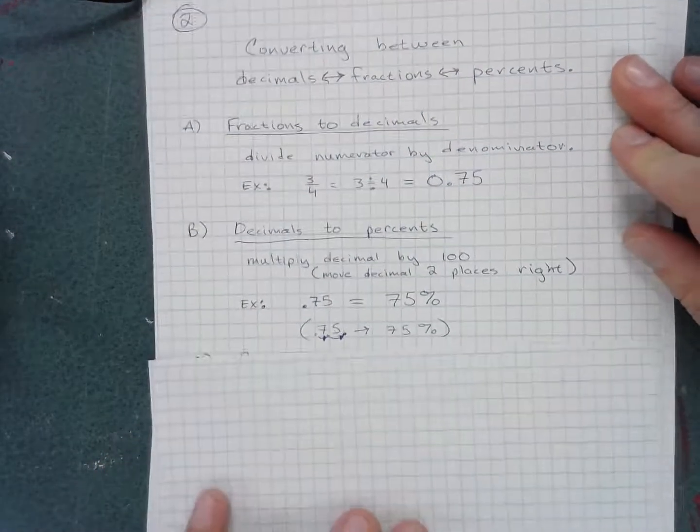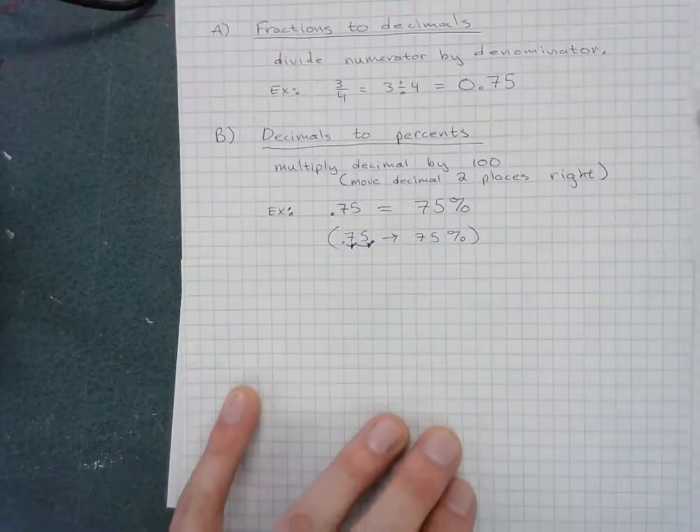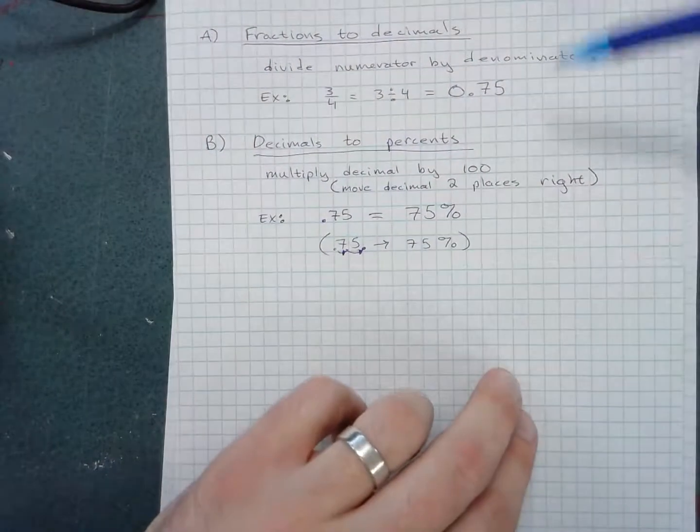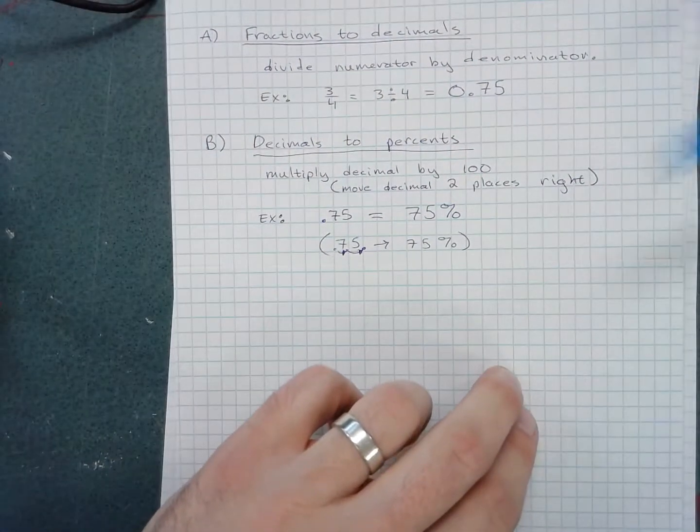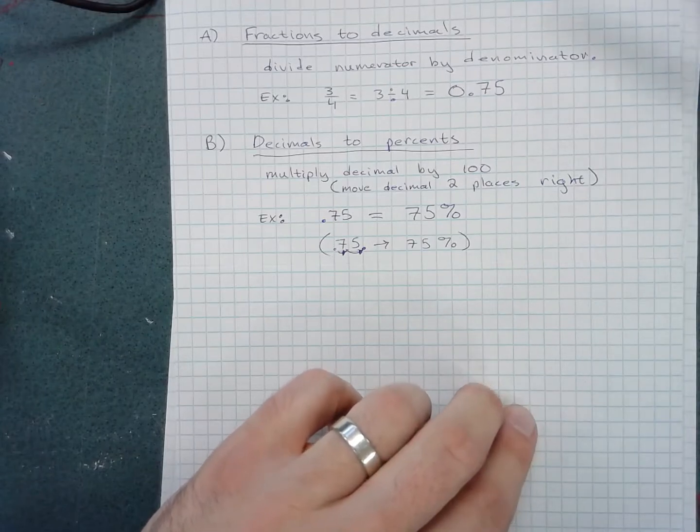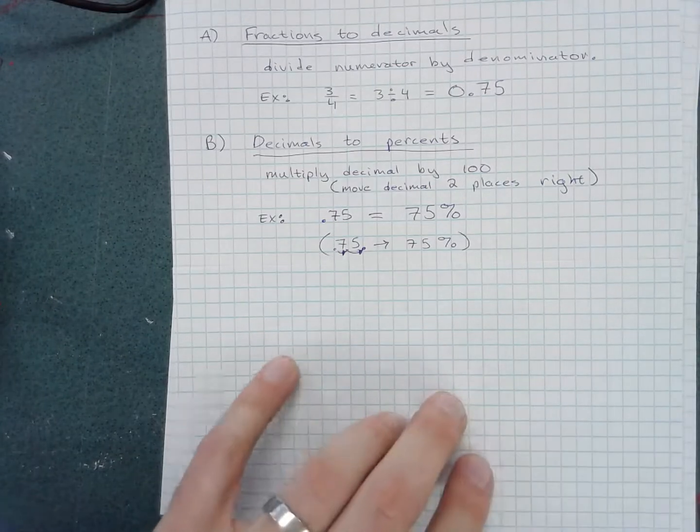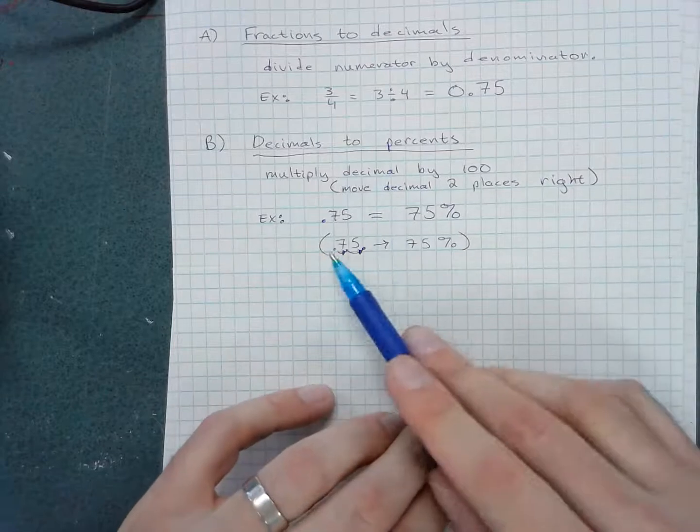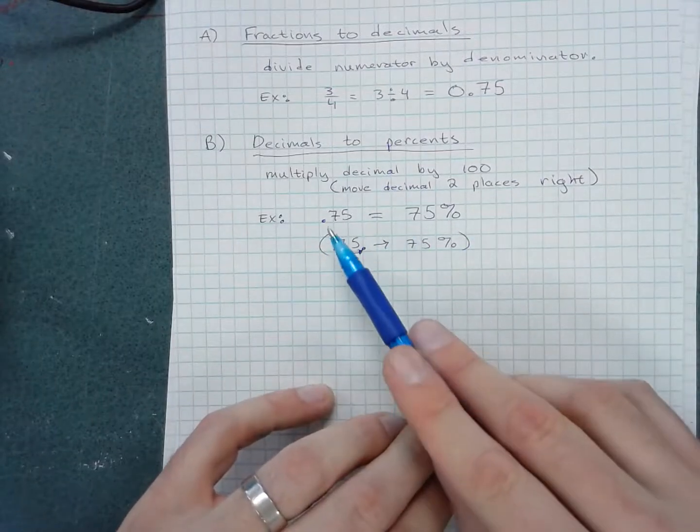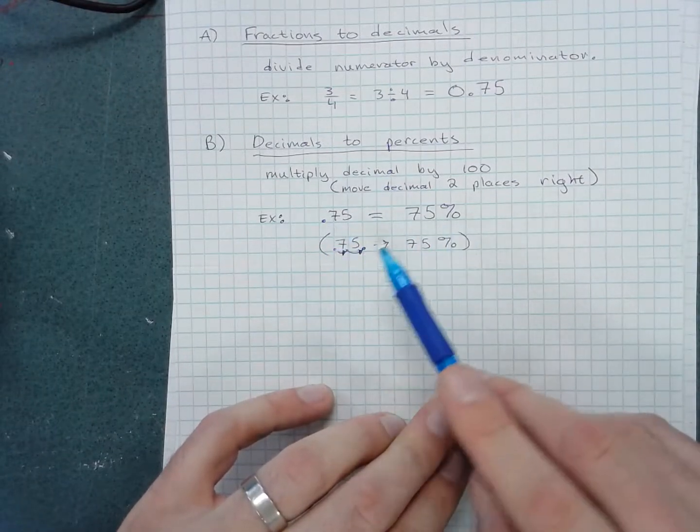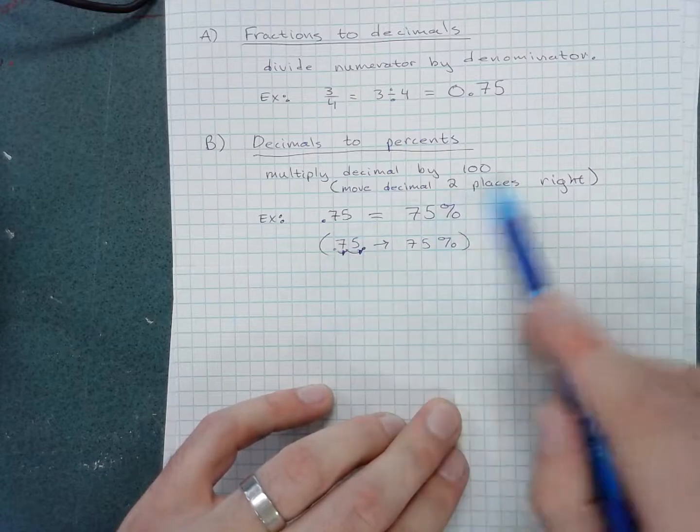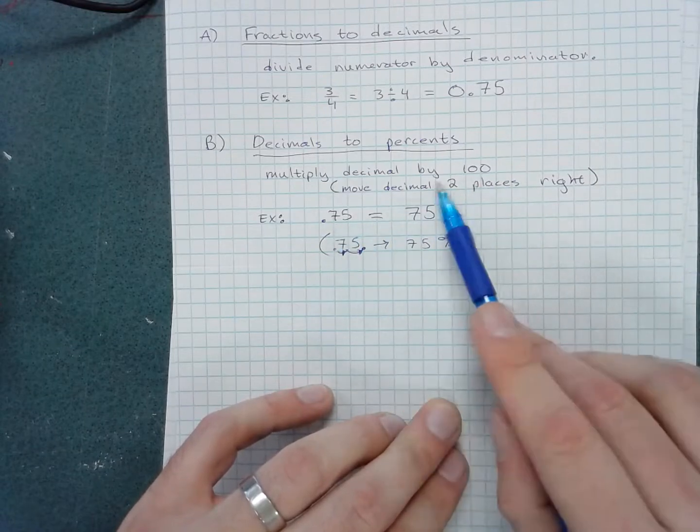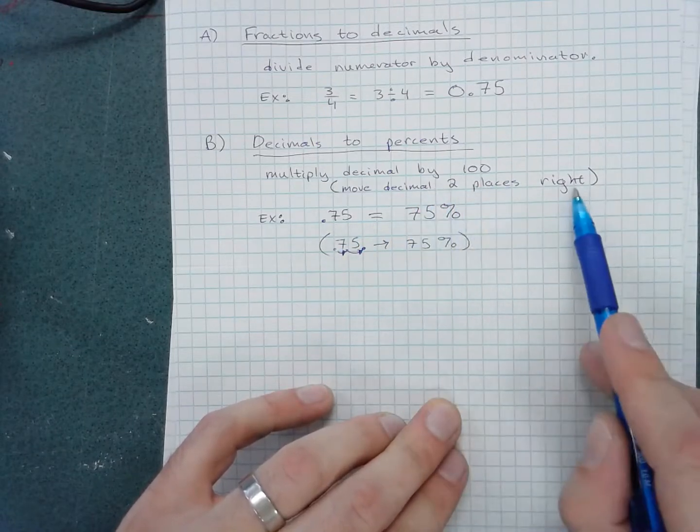Maybe you want to convert your number to a percentage. This is fairly easy too. Percent means per 100. There's a quick way to convert from a decimal to a percentage: move the decimal place over two spots to the right.